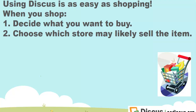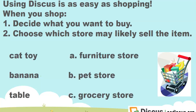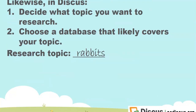Using Discus is as easy as shopping. When you shop, decide what you want to buy and choose which store may likely sell the item. For instance, where won't you find a cat toy? A table? A banana? Likewise, in Discus, decide what topic you want to research and choose a database that likely covers your topic.